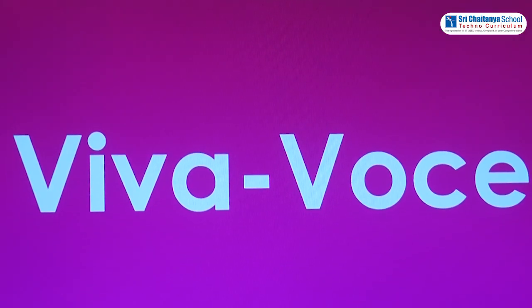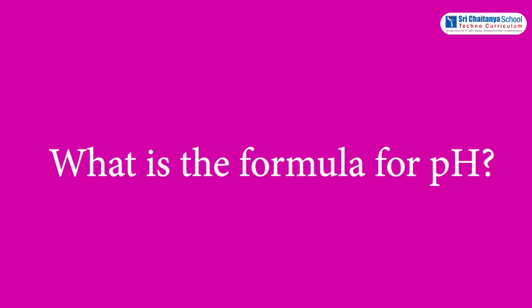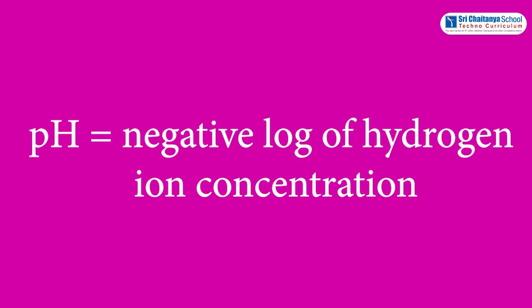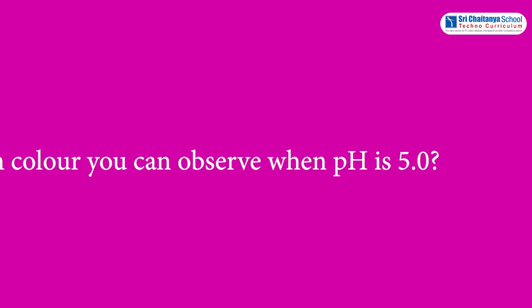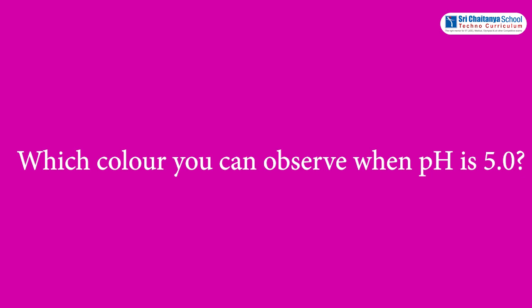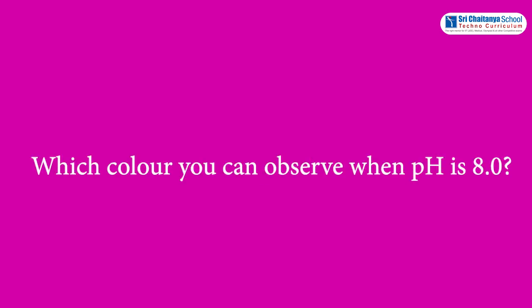Based on this experiment, here are a few questions. What is the formula for pH? The answer is pH = −log[H⁺]. What is the pH color at 5.0? The answer is orange-red. What is the pH color at 8.0? The answer is blue.